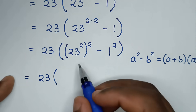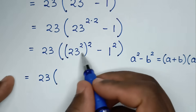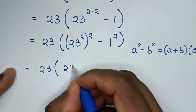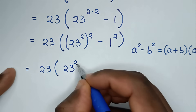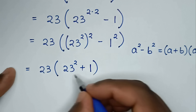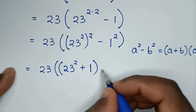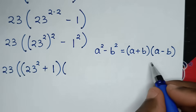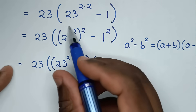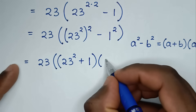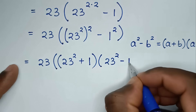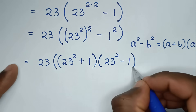So by applying this form it will be equal to 23, then bracket — for a plus b it will be 23 squared plus 1, so 23 squared plus 1, then bracket times bracket — for a minus b it will be 23 squared minus 1, so 23 squared minus 1, bracket.